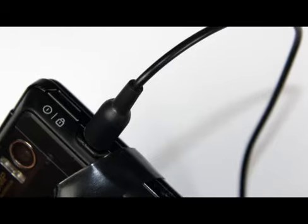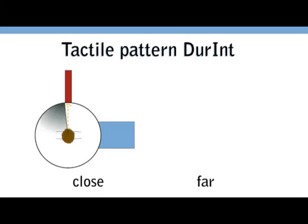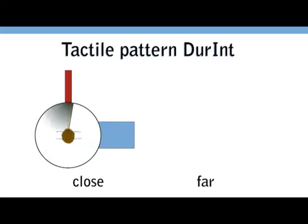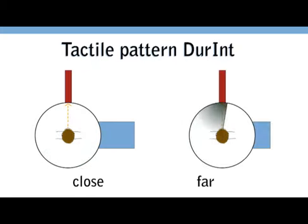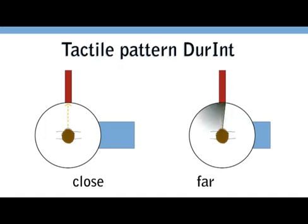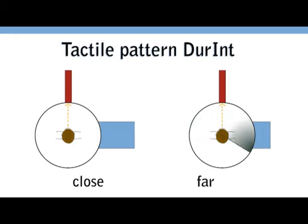For the first pattern, the signal duration is distinct for the different directions, while intensity is used to show the remaining distance to the turn. When the vibration is weak, the turn is distant, like music is quieter when further away.